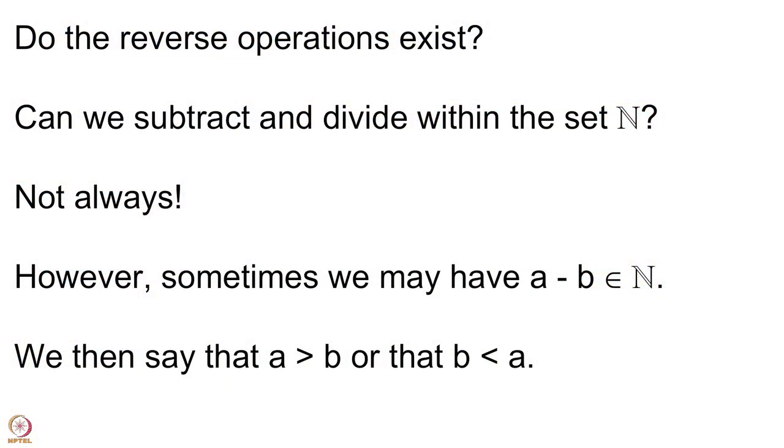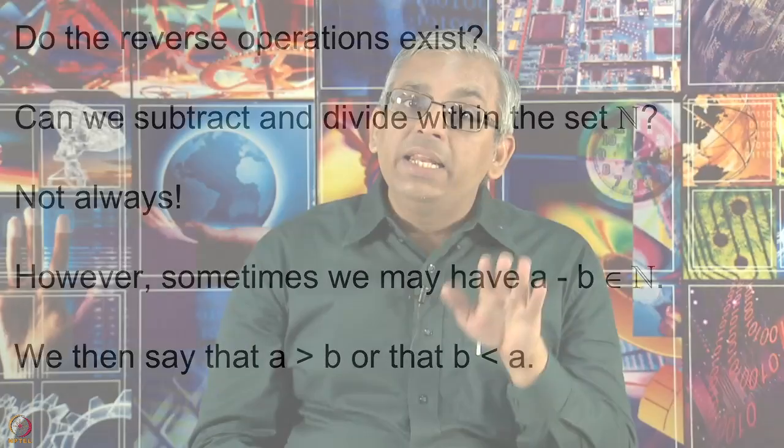Now we have the possibility that a minus b can be a natural number, so let us use this to define the relation of something being bigger than or smaller than another number. If you have a and b such that a minus b is natural, then we say that a is bigger than b, or equivalently b is less than a. This is our definition.